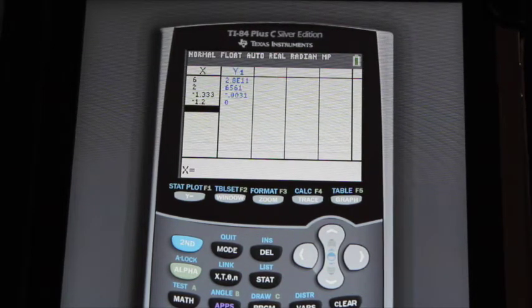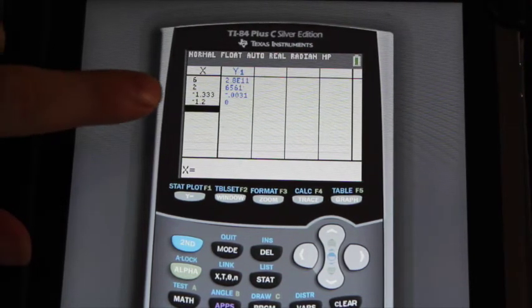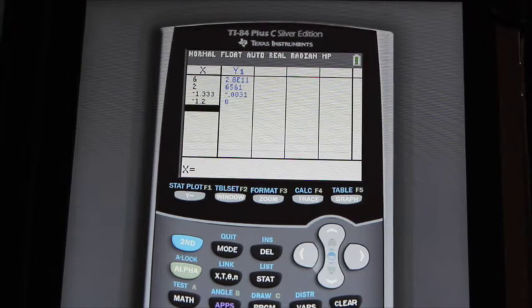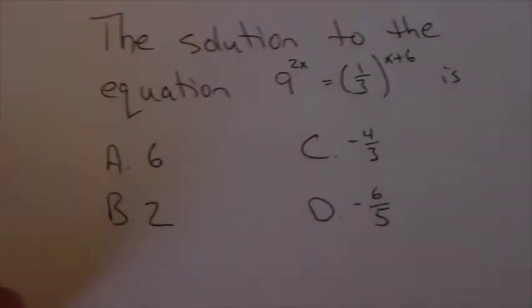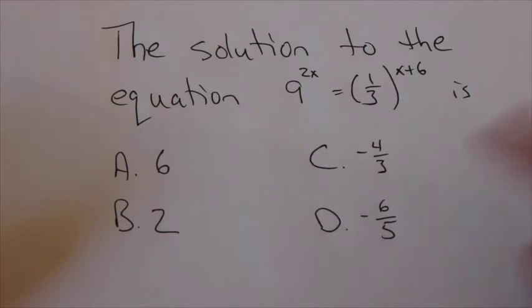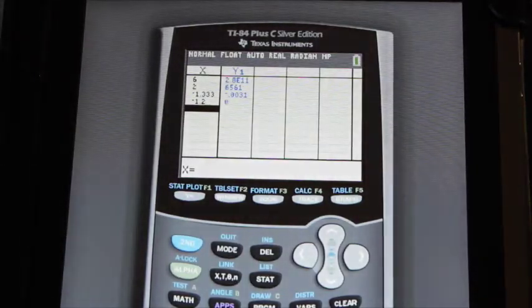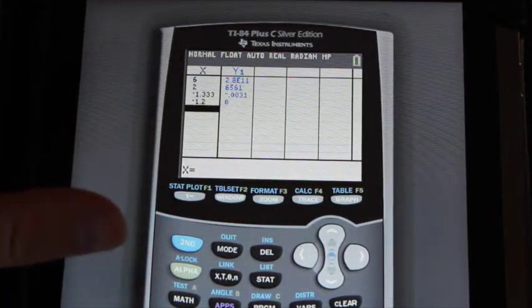What I'm looking for here is the option that gives me a 0, and in this case it's the last one. So the answer to this question would be negative 6 fifths, the answer is D. I'm looking for the value that gets me a 0 here.